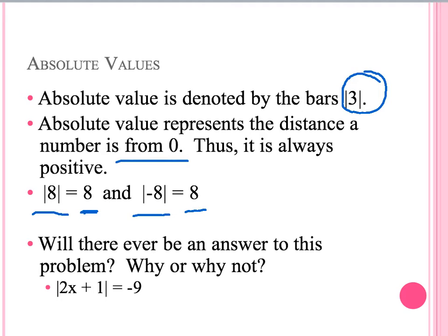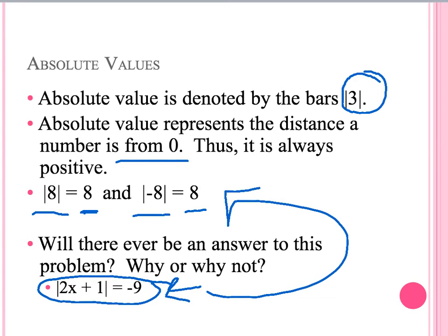Will there ever be an answer to this problem below? The answer is no. We cannot have an absolute value equal to a negative number because of that rule. We know an absolute value must always have a positive answer, so this one below will not work — the answer would be no solution.